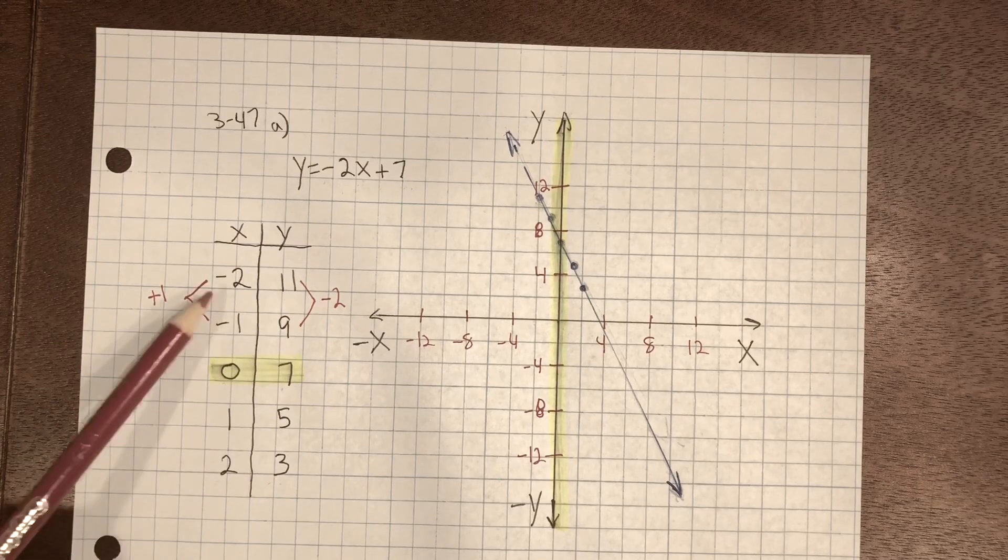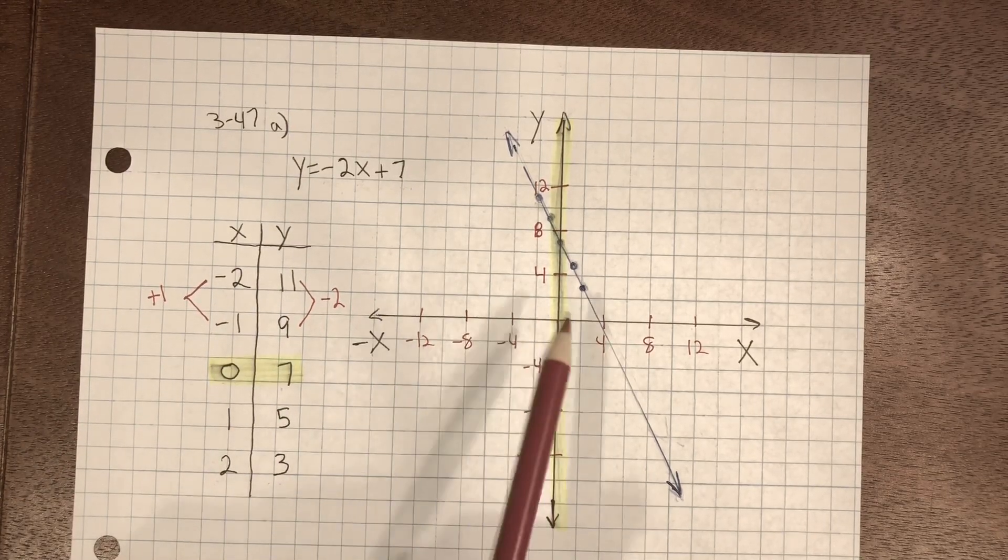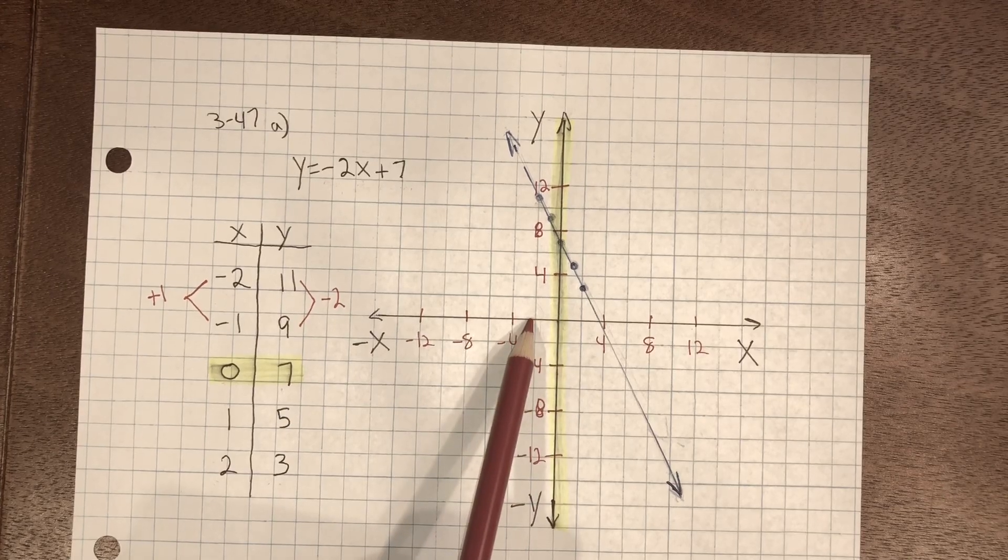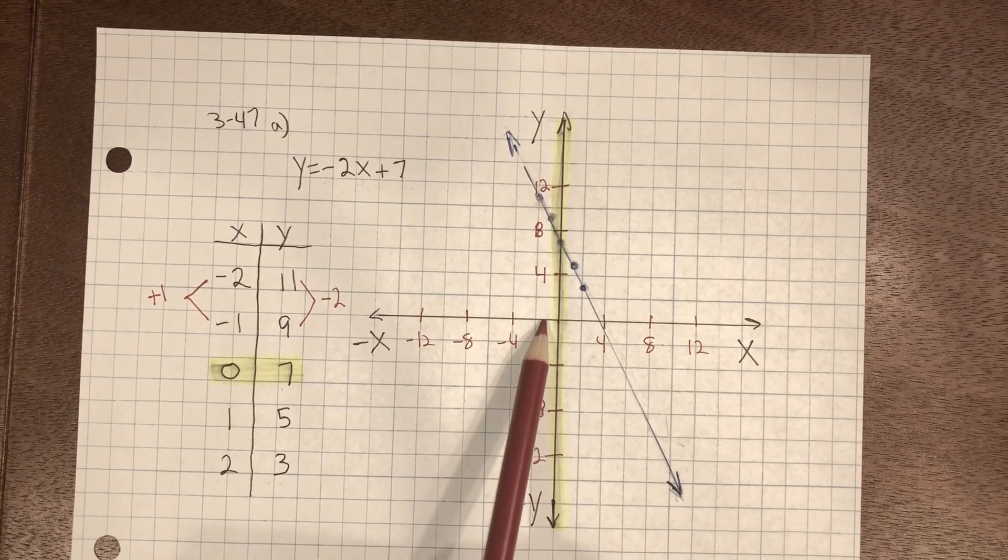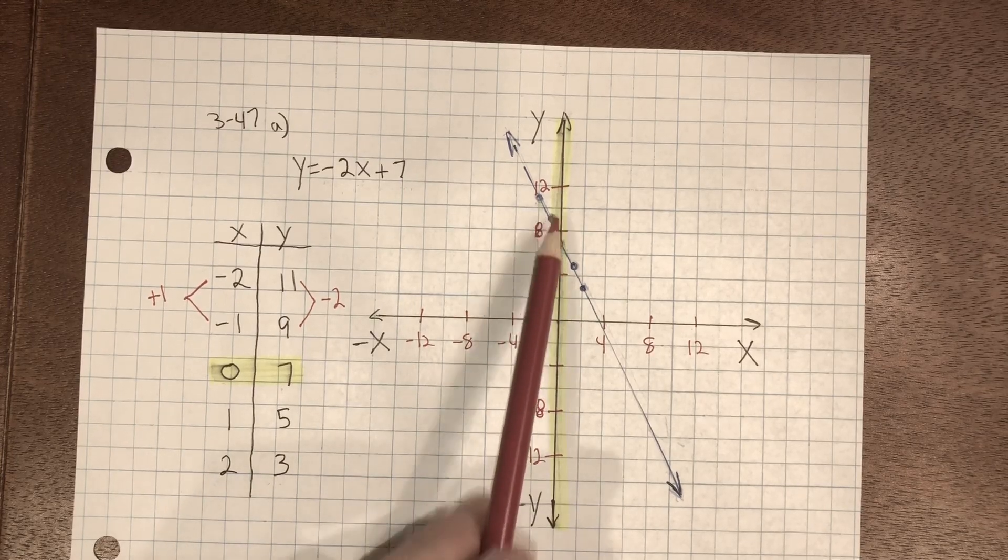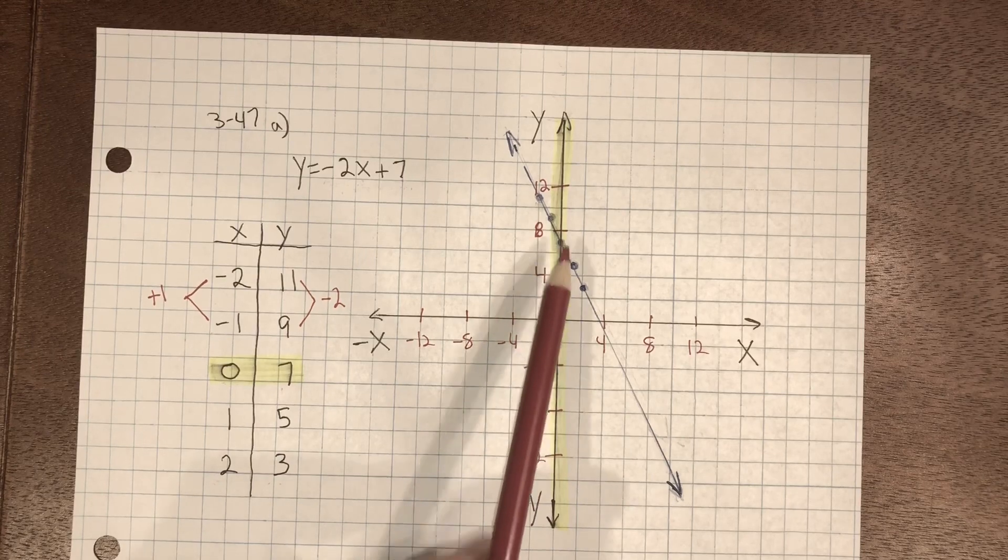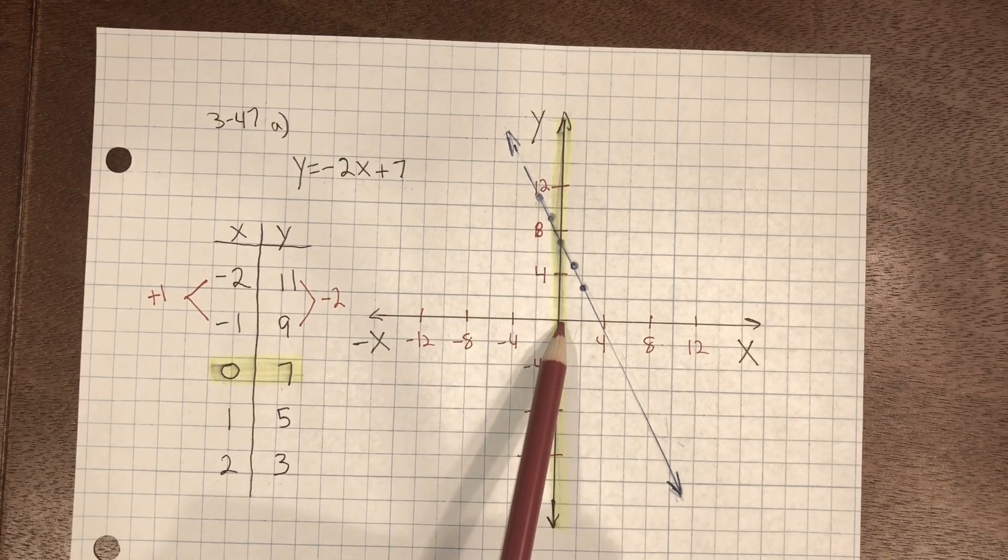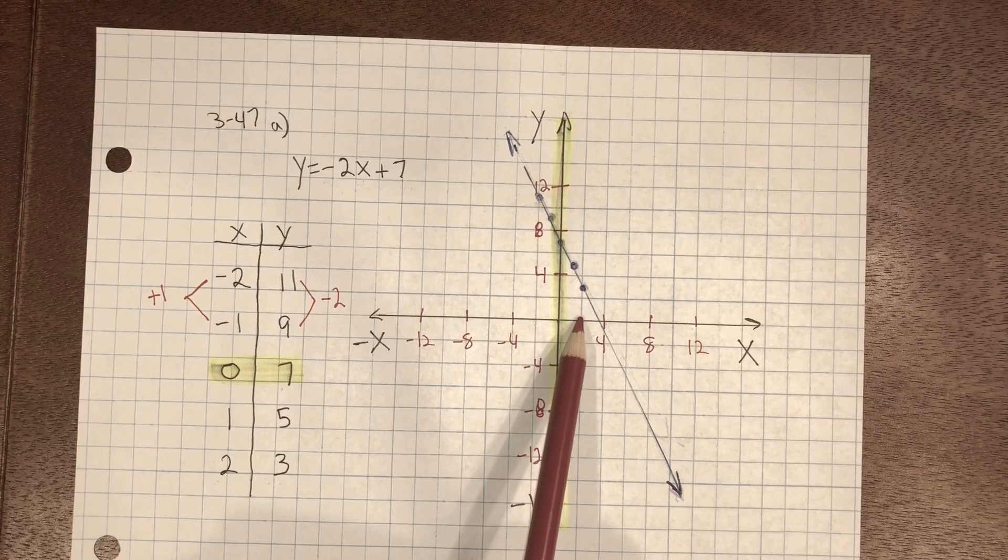Now I'm going to take these values and plot them on the graph. Negative two comma 11, negative one comma nine, zero on the x, seven on the y, one comma five and two comma three.